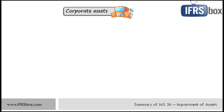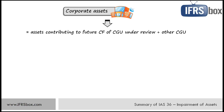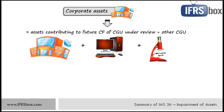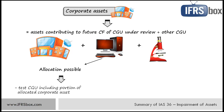When dealing with the impairment loss of CGUs or business combinations, there may be a complication with so-called corporate assets — those are assets other than goodwill that contribute to future cash flows of both the CGU under review and other CGUs. Typical examples include headquarters, administrative buildings, EDP equipment or a research center. When testing a CGU for impairment, an entity must identify corporate assets that relate to that CGU. If a portion of a corporate asset's carrying amount can be allocated to the unit on a reasonable and consistent basis, then the entity compares the recoverable amount of that unit with its carrying amount plus the allocated portion of the corporate asset. If allocation is not possible at the lowest single unit level, try to allocate corporate assets at a higher or group level.